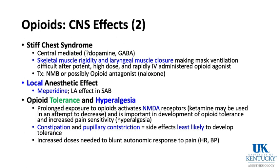Opioid tolerance and hyperalgesia: with prolonged exposure to opioids, you can have activation of the NMDA receptor. Ketamine may be used perioperatively to decrease this NMDA receptor activation, which appears important in the development of opioid tolerance and increased pain sensitivity — hyperalgesia. Constipation and pupillary constriction are the side effects least likely to develop tolerance to, so someone taking opioids chronically still has constricted pupils and constipation.